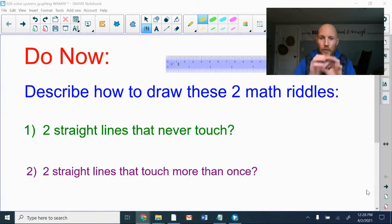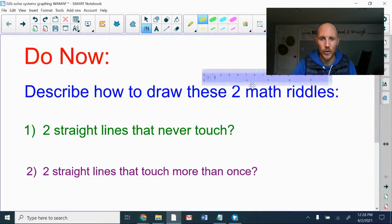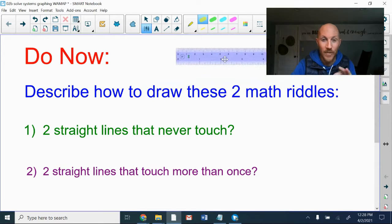Number one, two perfectly straight lines, like drawn with a ruler, that never touch each other.